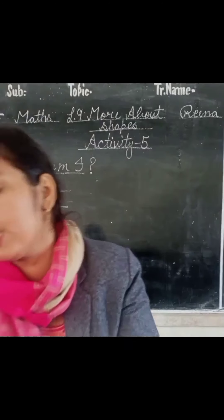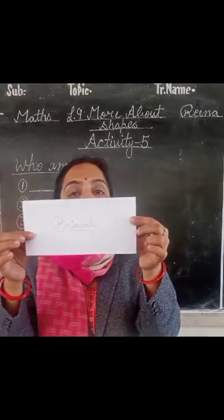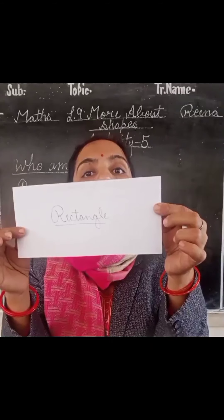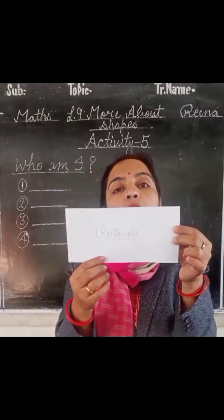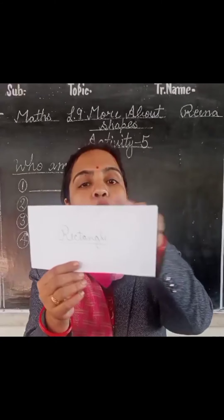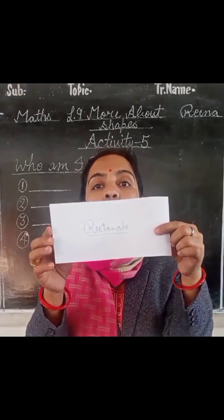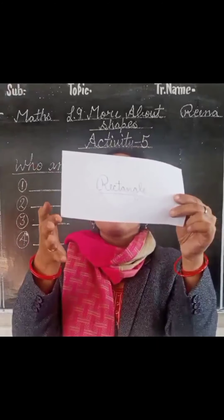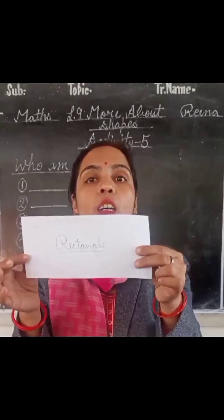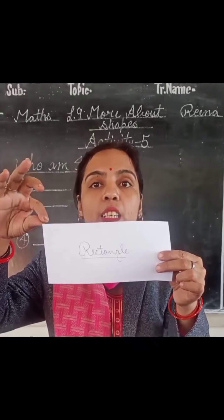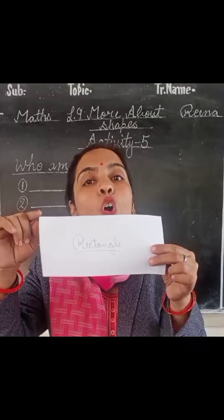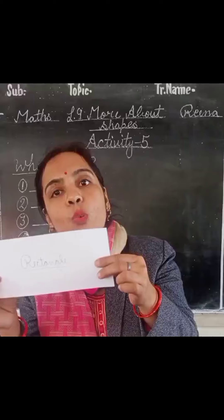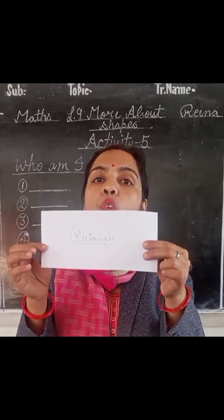Now the second type of shape is rectangle. This paper is a rectangular shape. In a rectangle, how many sides? 4 sides: 1, 2, 3 and 4. And how many corners in a rectangle? 4 corners: 1, 2, 3 and 4. A corner is where 2 lines meet and intersect — that is what we call a corner or vertex.